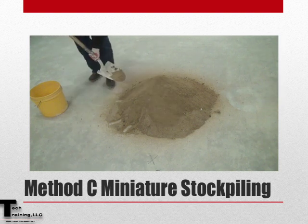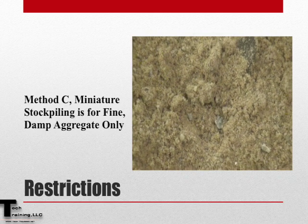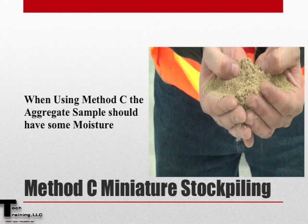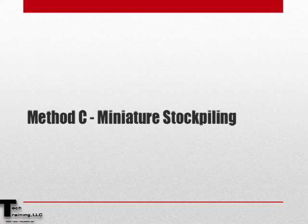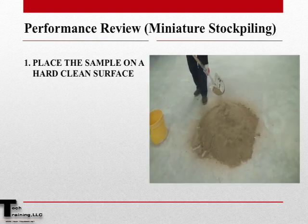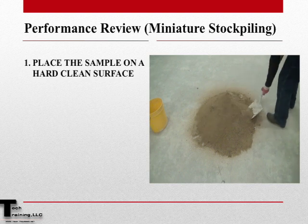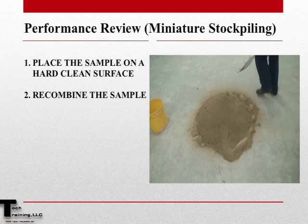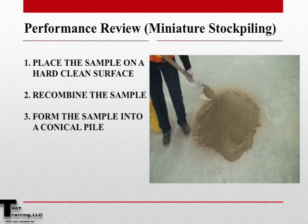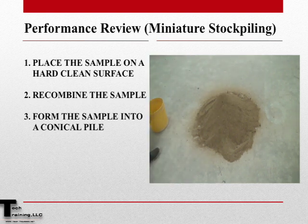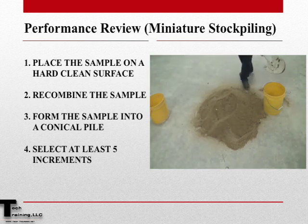Let's now review Method C — miniature stockpiling. Method C is for fine, damp aggregate only, and like Method B, some surface moisture must be present on the sample. The sample should be placed on a hard, clean surface; select a location where there will be no loss of material and no chance of contaminating the field sample. Then the sample can be recombined and, once recombined, formed into a conical pile. If desired, flatten the pile by pressing down on the apex to a uniform thickness and diameter. Then obtain the test sample by selecting at least five increments from the pile for each test that is to be performed.